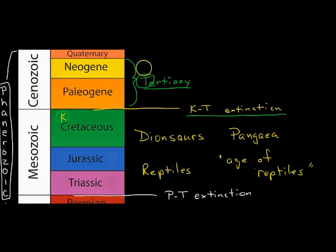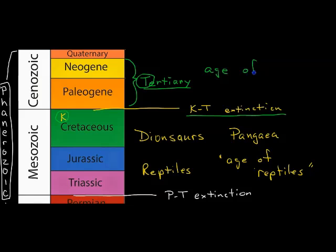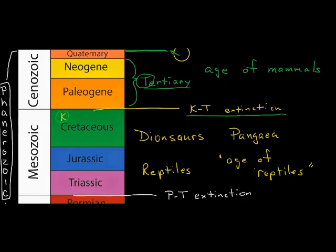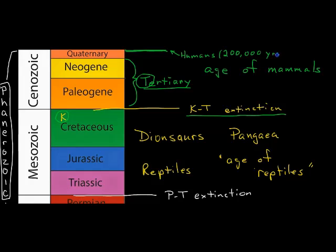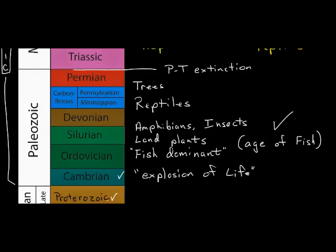The Cenozoic era is the era that we are in now, and it is marked as the age of mammals. Way up at the very thin end of the time scale is the section that signifies the age when humans first came into the picture. Modern humans have only been on the planet for a mere 200,000 years — just a blink of an eye when you consider the entire span of geologic time.